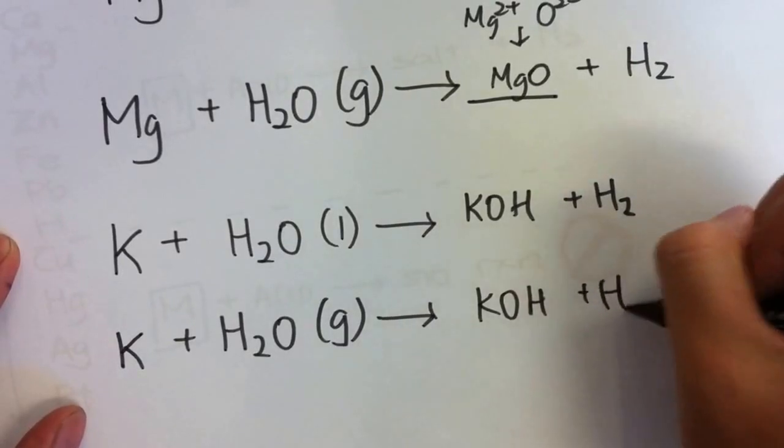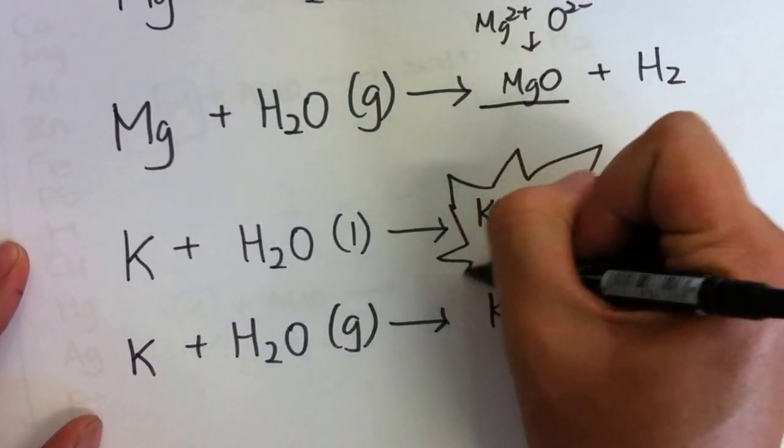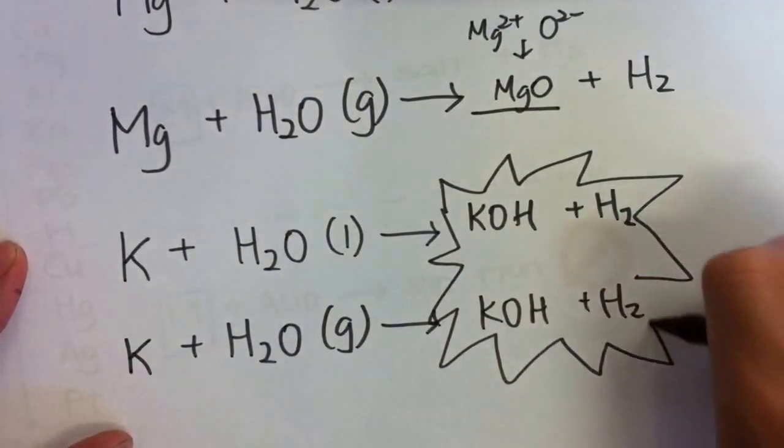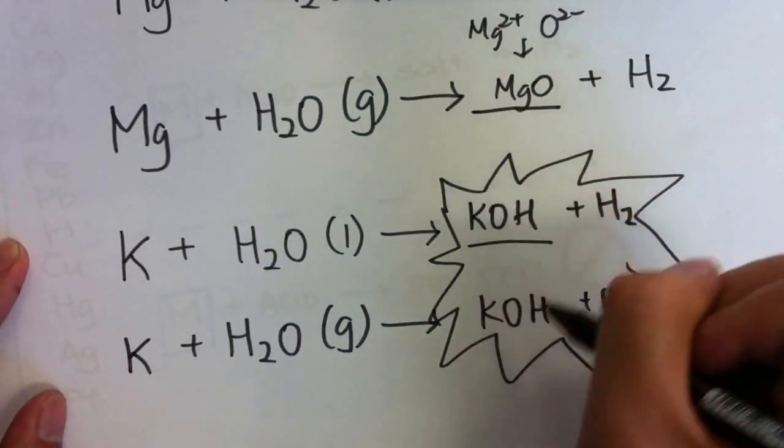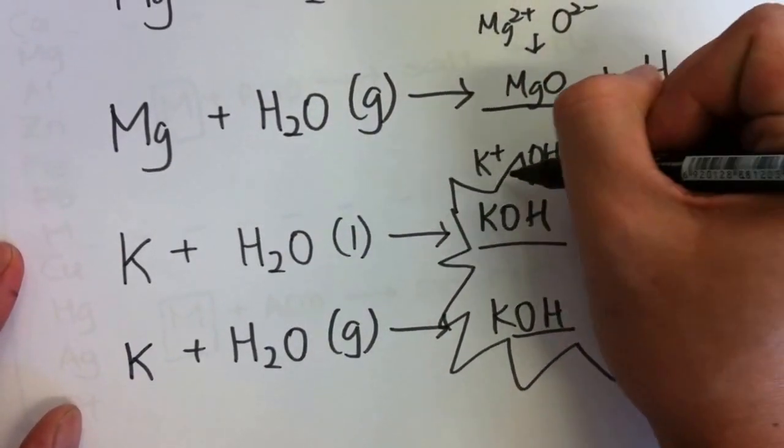But this is a very violent reaction. How did we get KOH? K+ plus OH-, so you've got to work it out to get the hydroxide.